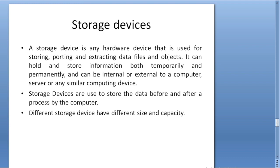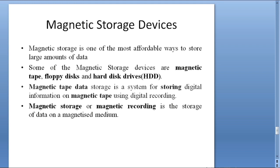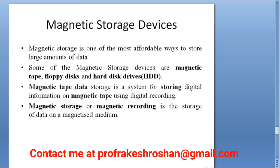Now we see the first category of storage devices, which is the magnetic storage device. Here we are discussing the categories of storage devices. Magnetic storage devices are one of the most affordable ways to store large amounts of data — they are very low cost. Some magnetic storage devices are magnetic tape, magnetic disk, floppy disk, and hard disk drive. Some of these are now outdated; for example, floppy disks and magnetic tapes are no longer commonly available in the market.